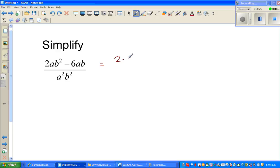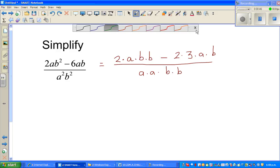2 times a times b times b minus 2 times 3 times a times b over a times a times b times b. I will circle the numbers and the letters which are common. I can see a 2 common here, I can see a 2 common here, I can see an a and an a here, and a b and a b here.